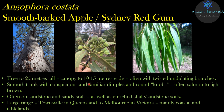It's a tree to 25 metres tall, canopy anywhere to 10 to 15 metres wide with those twisted undulating branches. Look for the salmon to light brown colour. It's often found on sandstone and sandy soils, especially the Hawkesbury sandstone, though it can get onto other substrates — enriched shale country too, such as blue gum high forest and Sydney turpentine ironbark forest. It's got a massive range — right up to Townsville in Queensland, down to the Melbourne area in Victoria, mainly coastal and tablelands.